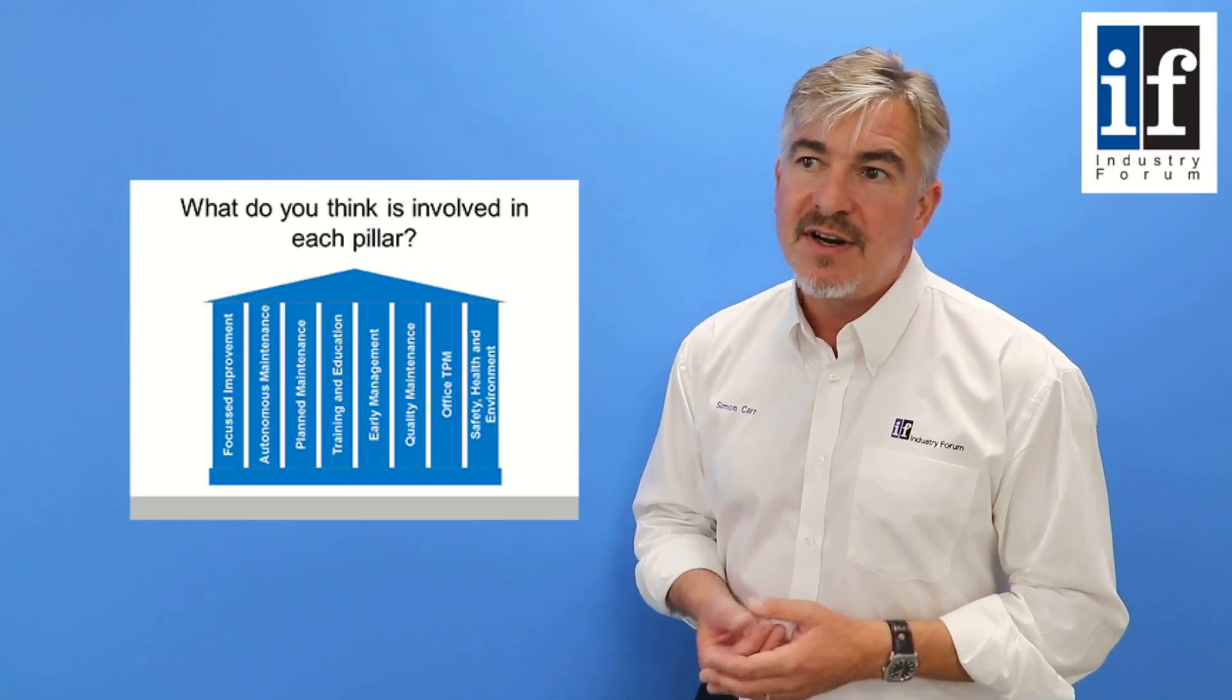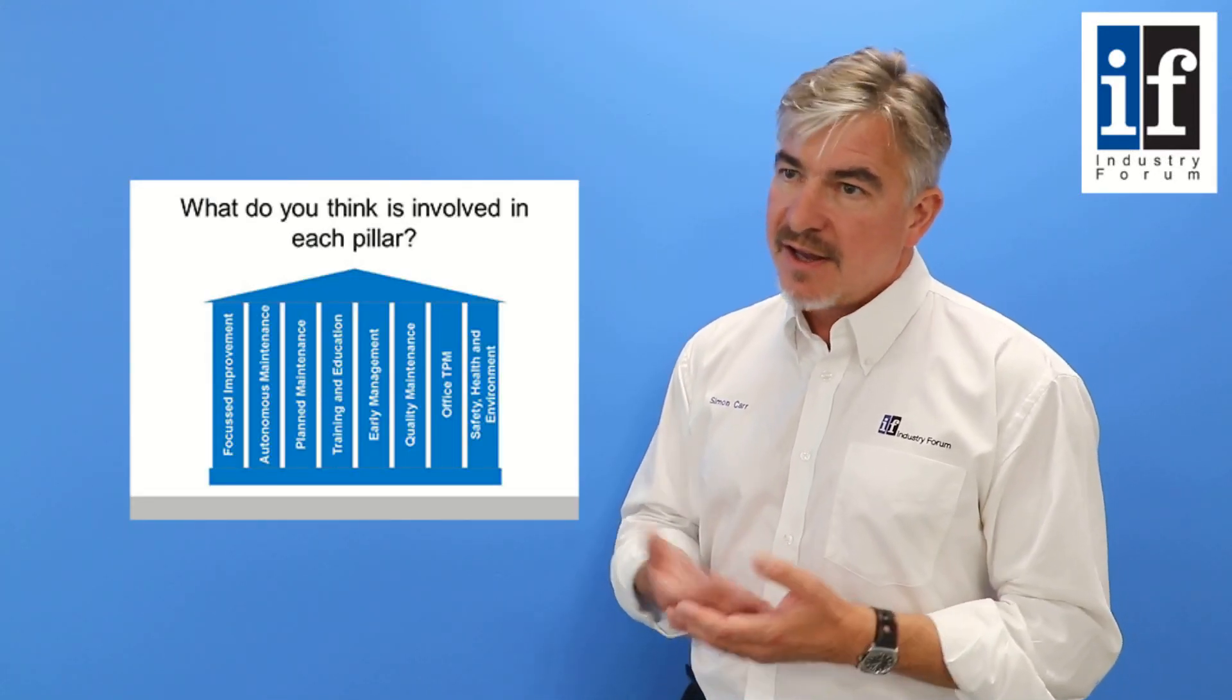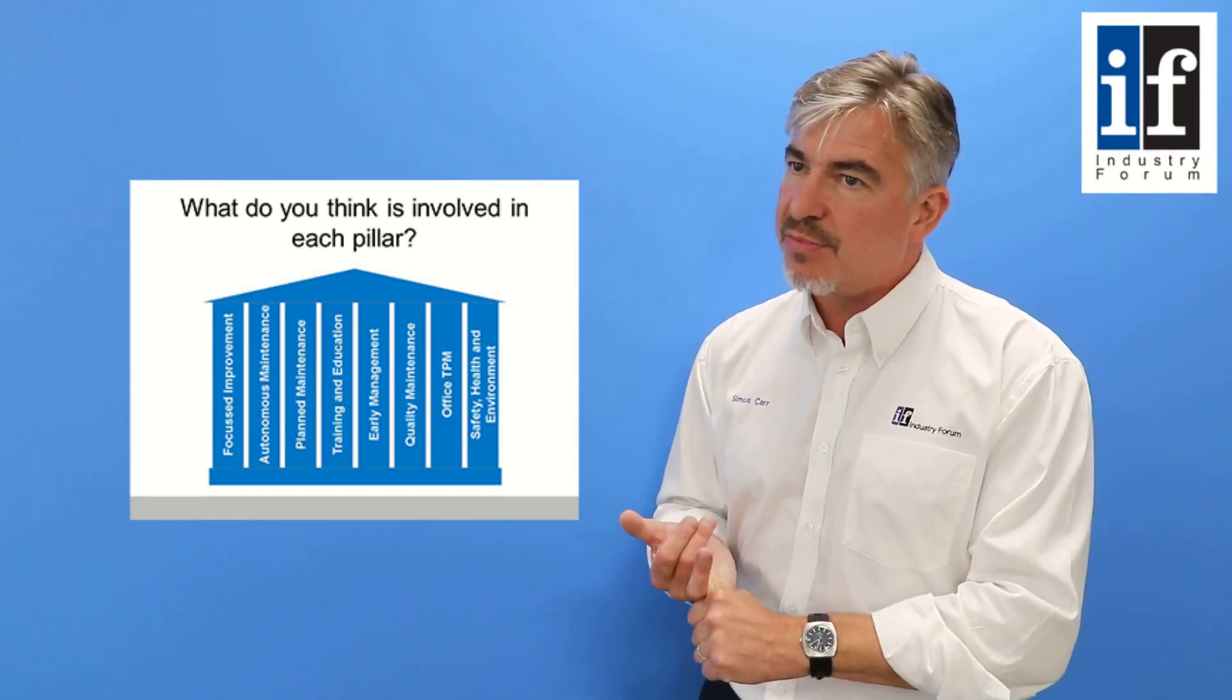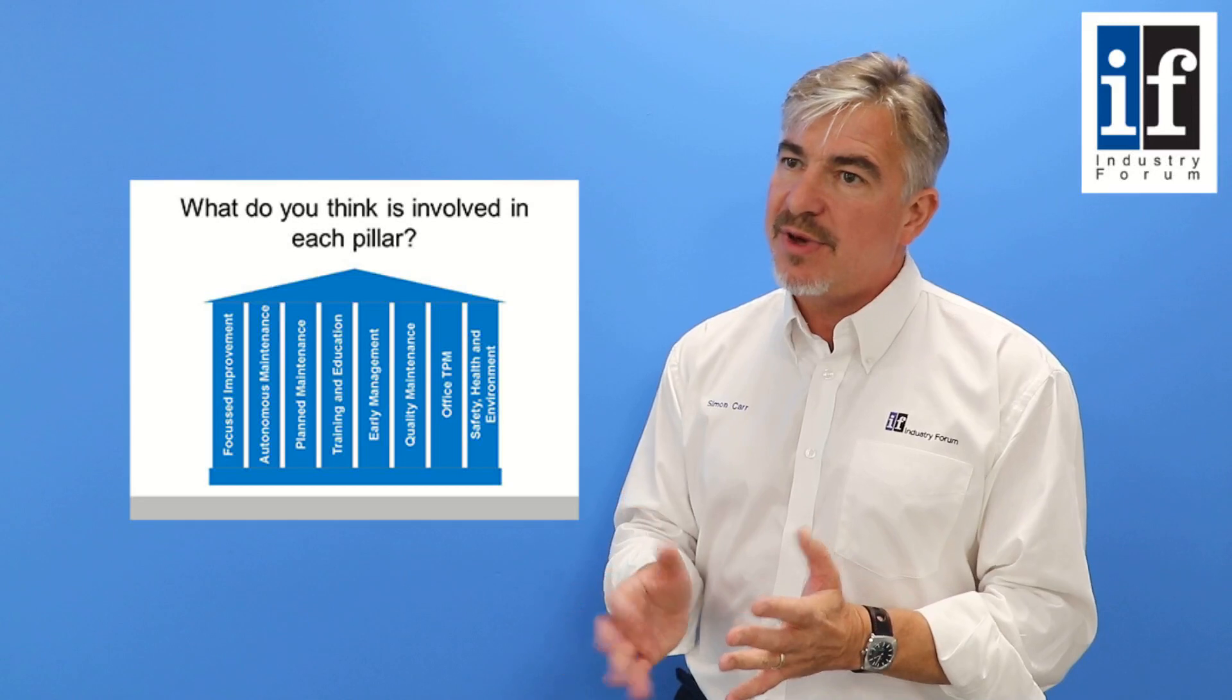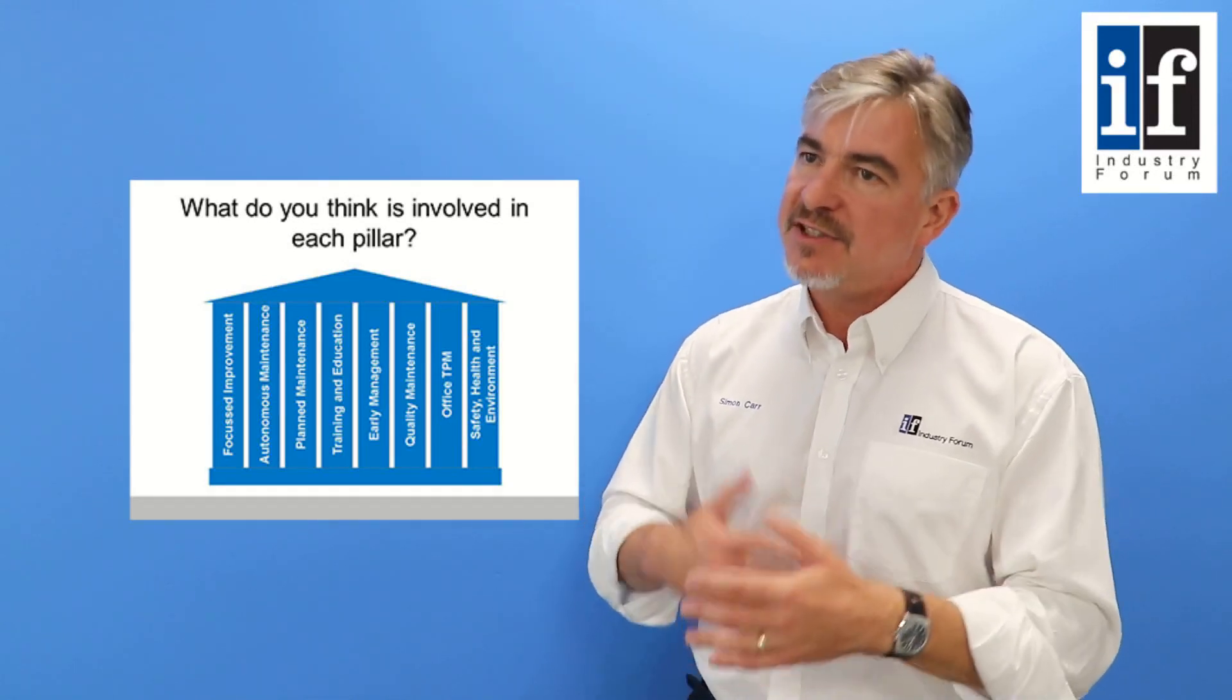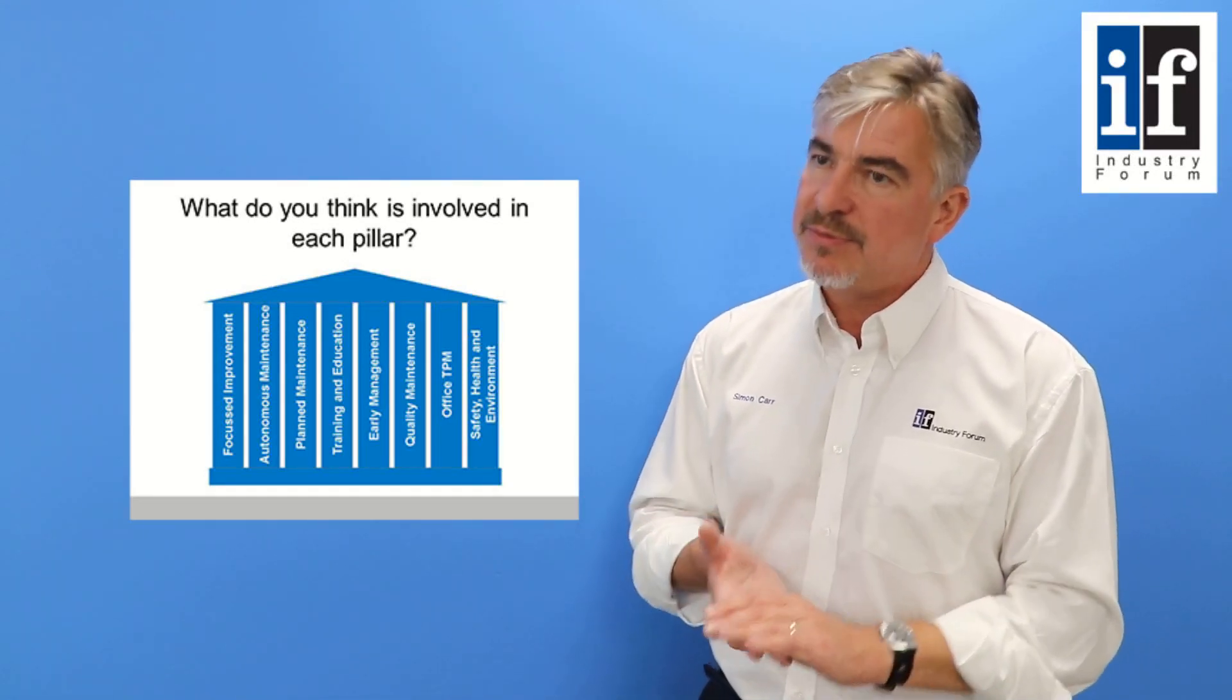The way it is delivered on the ground, the accountabilities come through a series of pillars, and there are eight pillars. In brief, there is one described as focused improvement, which is all about identifying where the biggest benefits will be and then in a sensible manner making those problems go away.